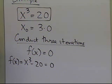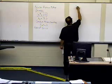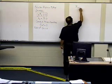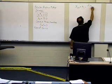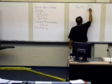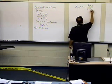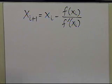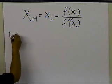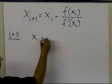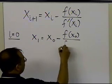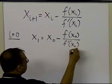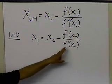So let's go ahead and conduct these three iterations by the Newton-Raphson method. If you look at the general formula for the Newton-Raphson method, it is x of i plus 1 is equal to x of i, minus the value of the function at the guess, divided by the derivative of the function at that guess. So if I choose i equal to 0, I'll get x1 is equal to x0, minus the value of the function at x0, divided by f prime of x0.